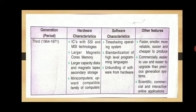In the third generation, the hardware used includes: first, ICs with SSI (Small Scale Integrated) and MSI (Medium Scale Integrated); second, larger magnetic core memory; and third, larger capacity disks and magnetic tapes as secondary storage. Many computers formed a compatible family of computers.